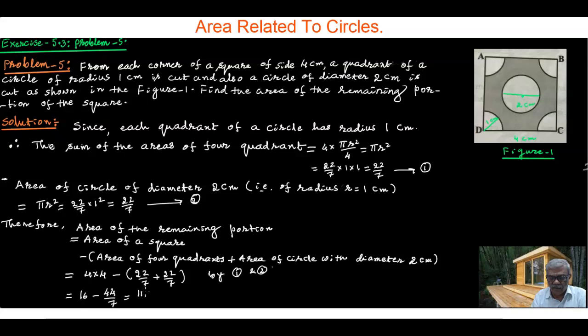16 minus 44/7 equals 68/7 square centimeters, or in decimal form, 9.71 square centimeters. Thank you.